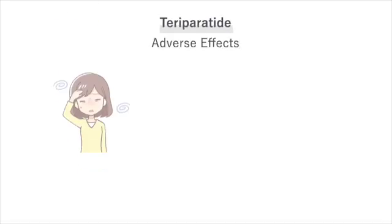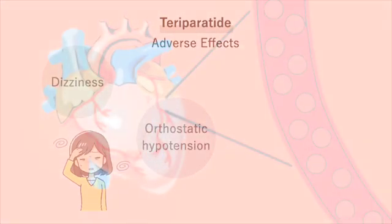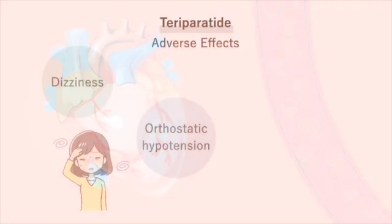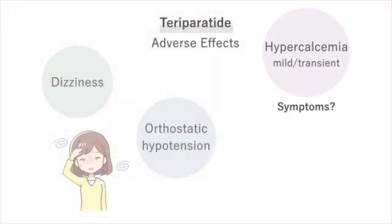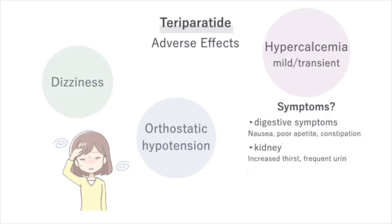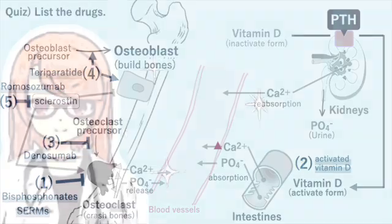What are the main adverse effects? PTH originally has a function of dilating blood vessels. You need to be careful of dizziness and orthostatic hypotension associated with vasodilation. Attention is also needed for temporary hypercalcemia associated with the bone resorption action of PTH. I will explain these in order.